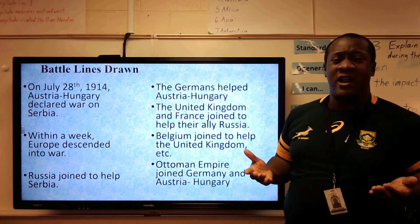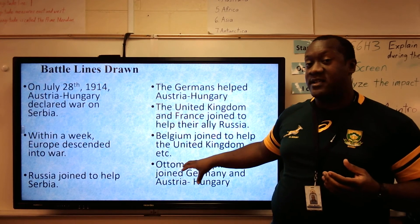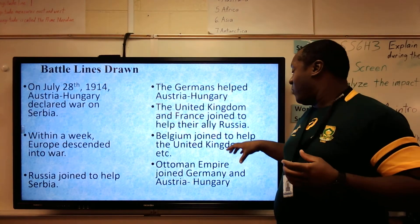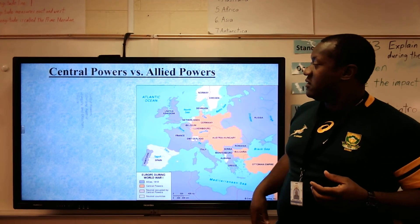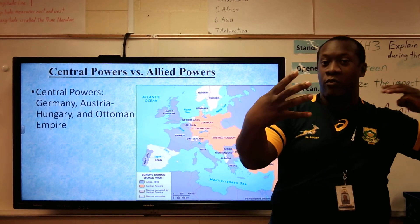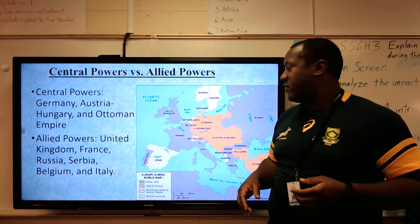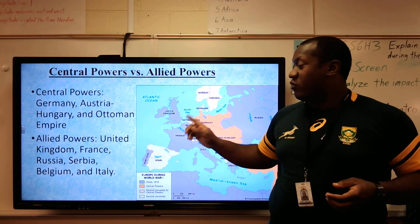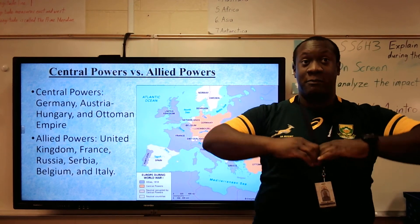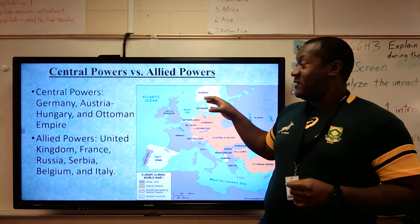The Ottoman Empire — which doesn't exist today; what's left of it is the country of Turkey — was huge, lasting from 1299 to 1922. They joined in on Germany and Austria-Hungary's side. So you've got a world war in which you have the Central Powers: Germany, Austria-Hungary, and the Ottoman Empire — those are the main ones, with more that joined. Versus the Allied Powers: Britain, France, Russia, Serbia, Belgium, Italy, and a whole lot of others. See how it started with two, and now it's just blown up into a huge catastrophe? That's World War I — that's how everything got started.